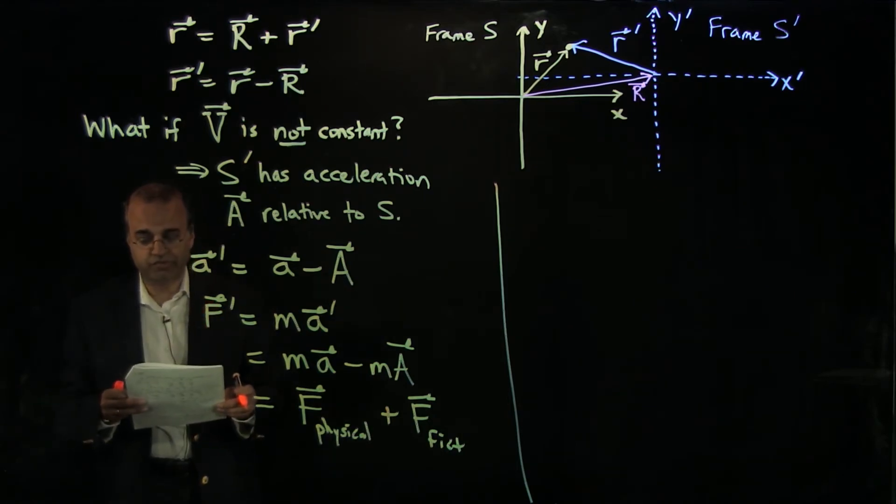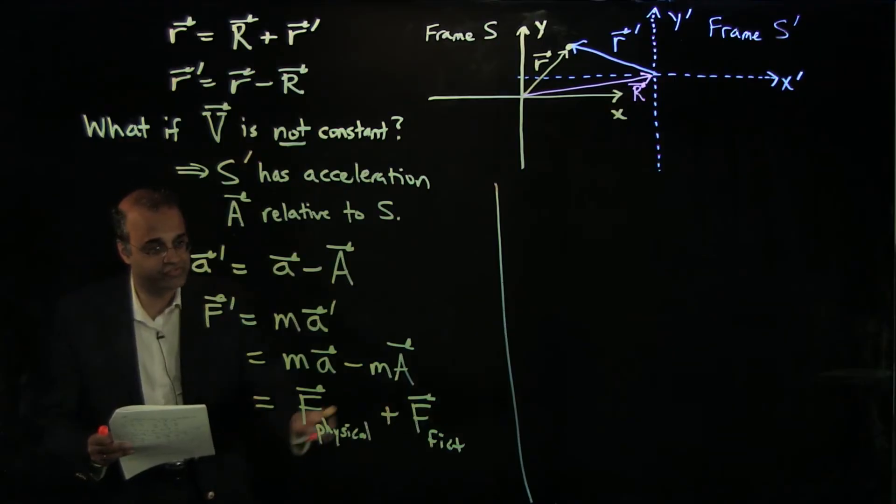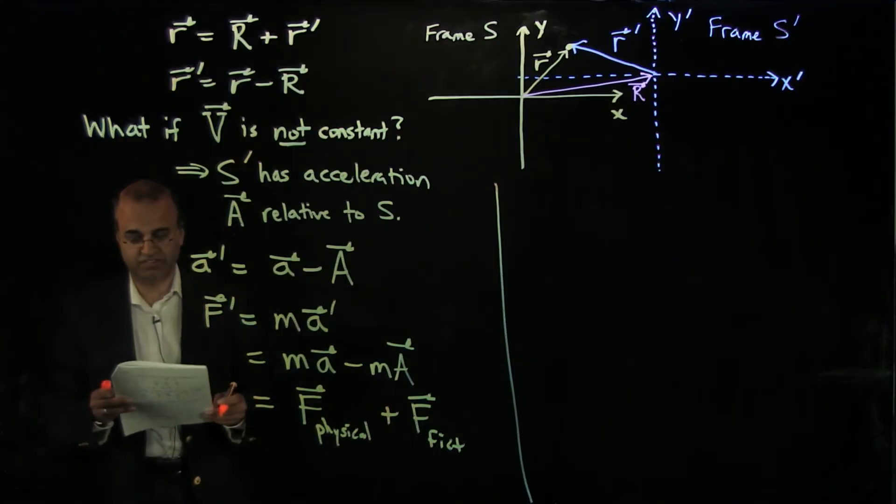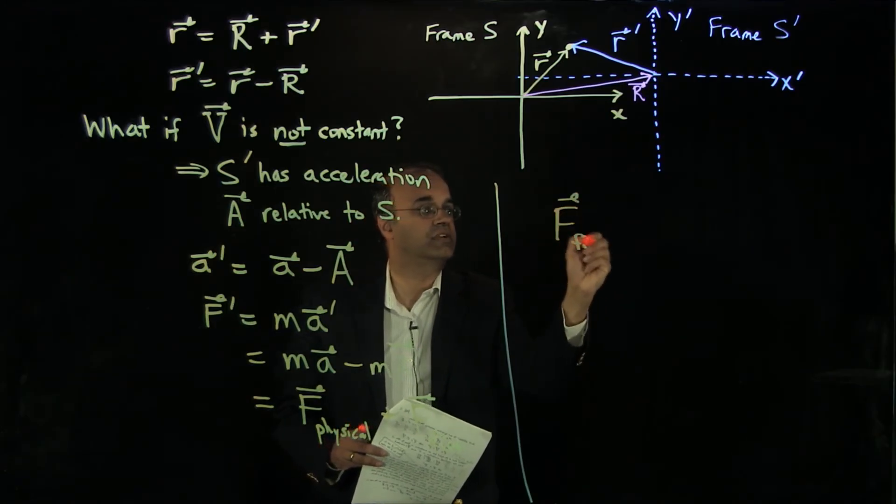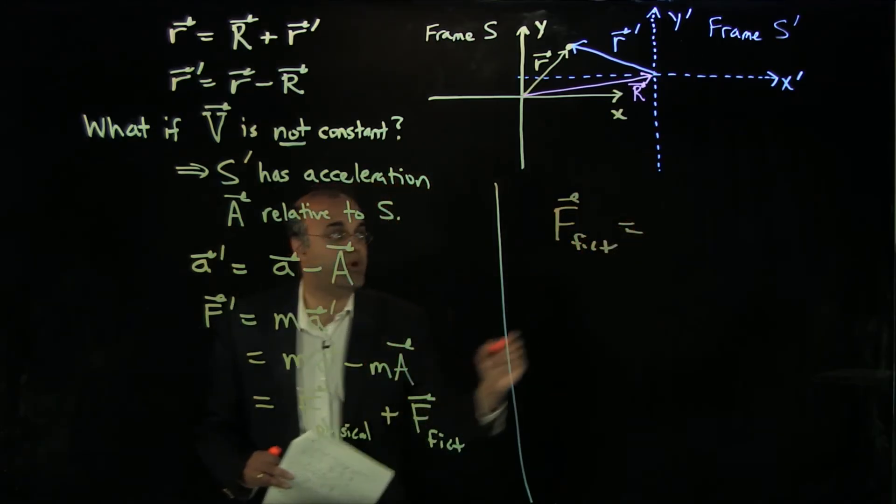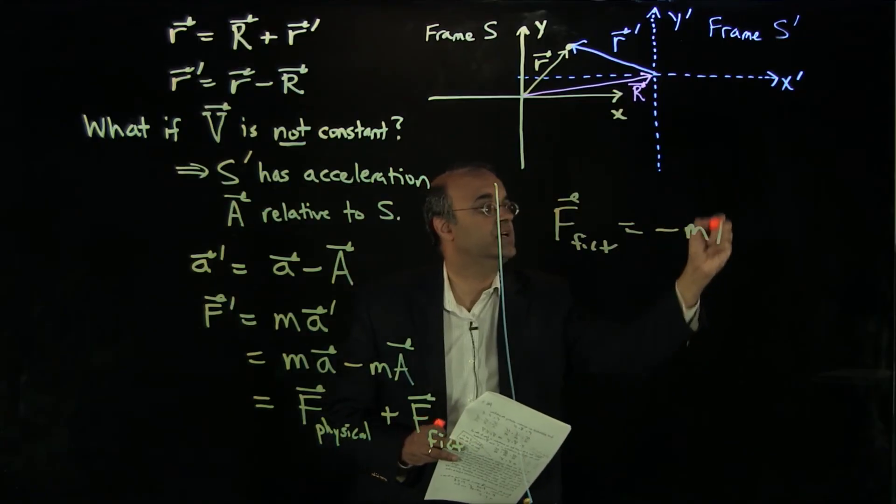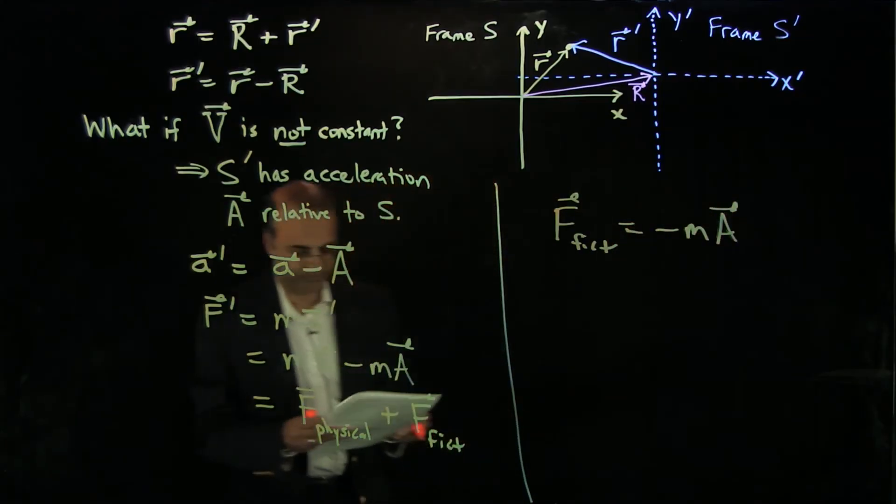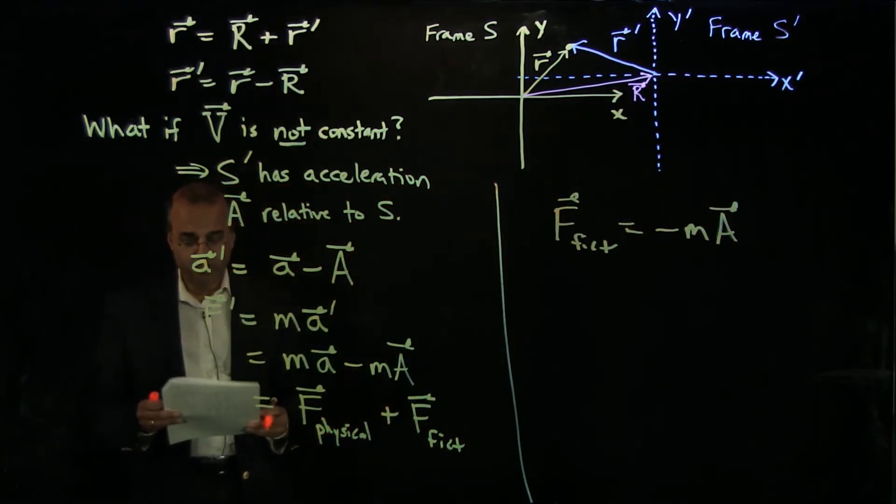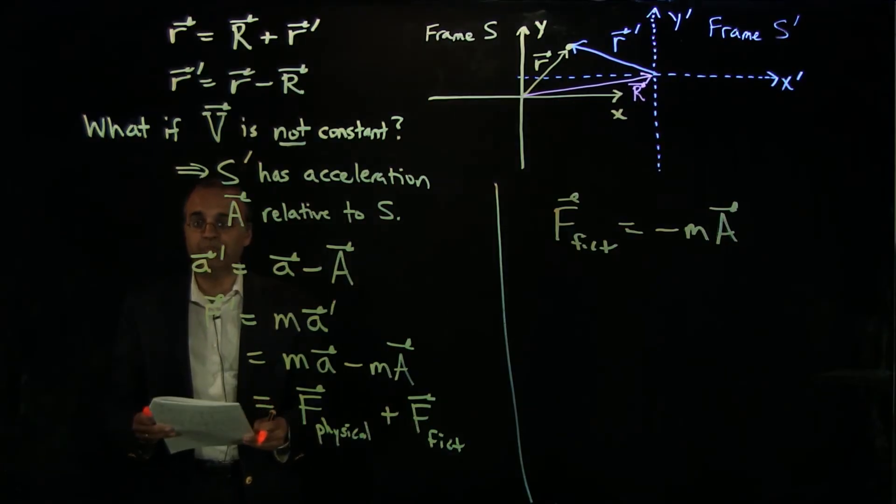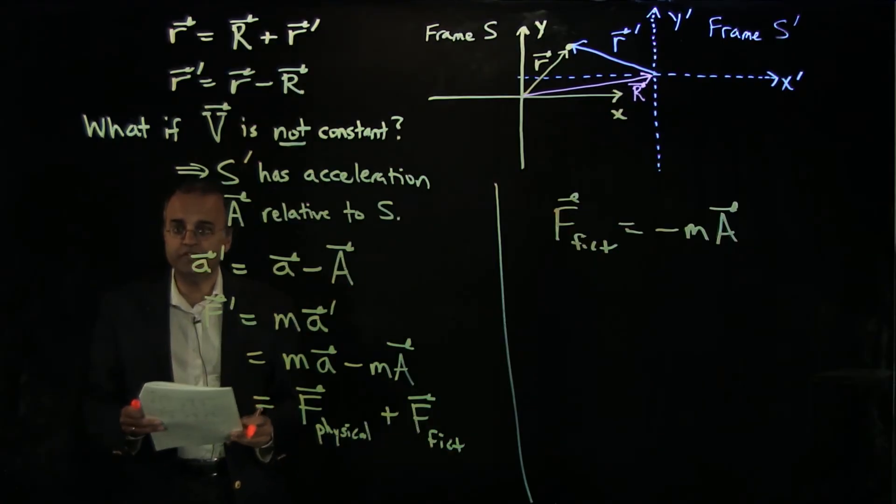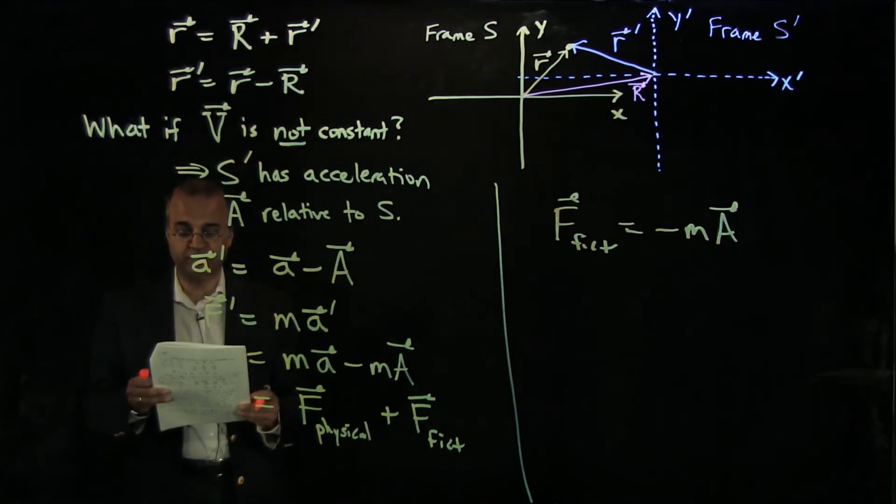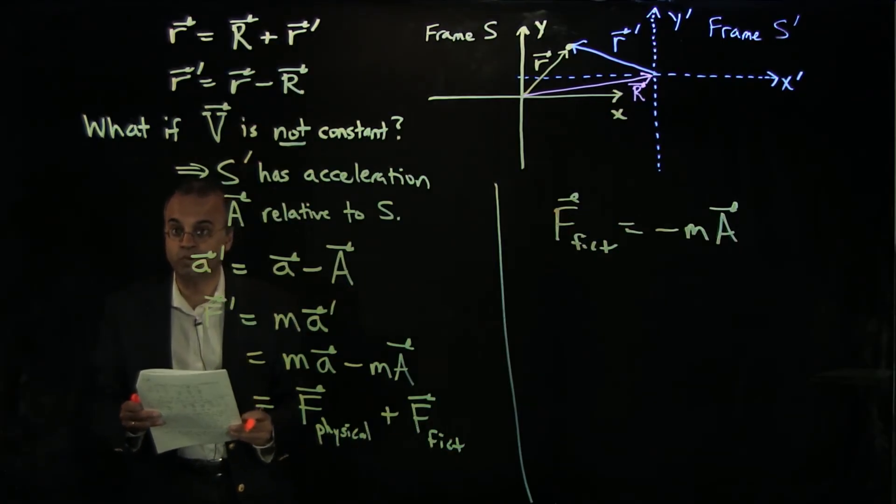But we'll also have to invoke an apparent force, which I'll call F fictitious, that acts on everything. And in this case, F fictitious is equal to minus m capital A. But that force will not be identifiable with any actual real physical interaction. It's an artifact of the choice of coordinate system, an artifact of the non-inertial coordinate system that frame S prime is in.